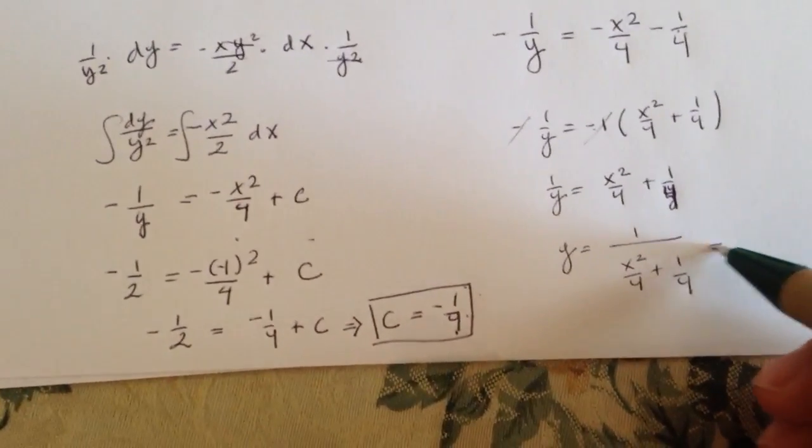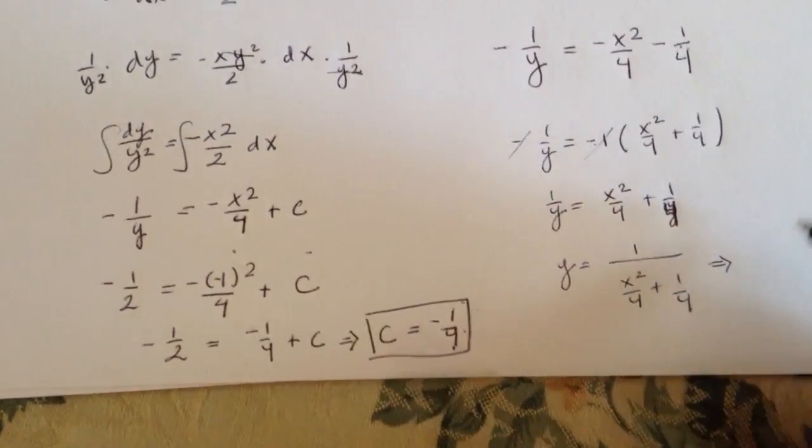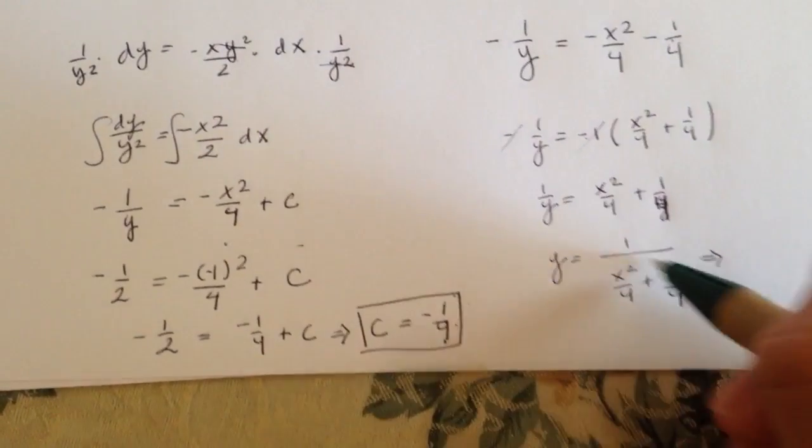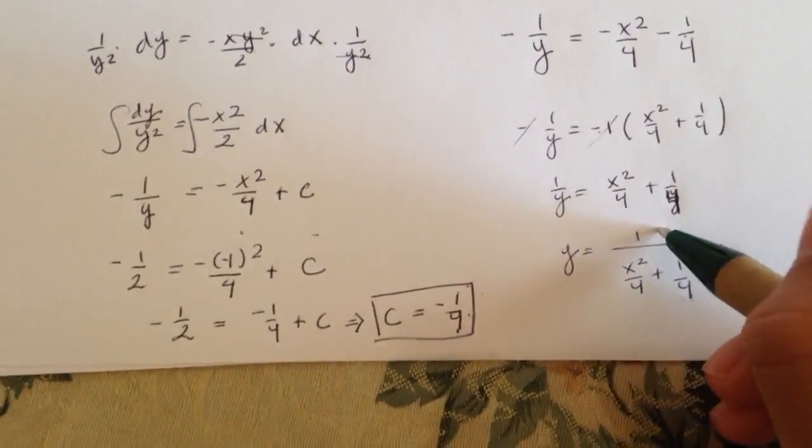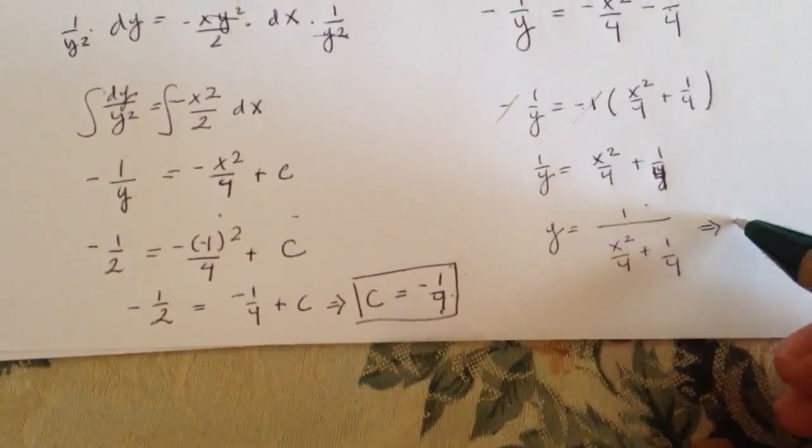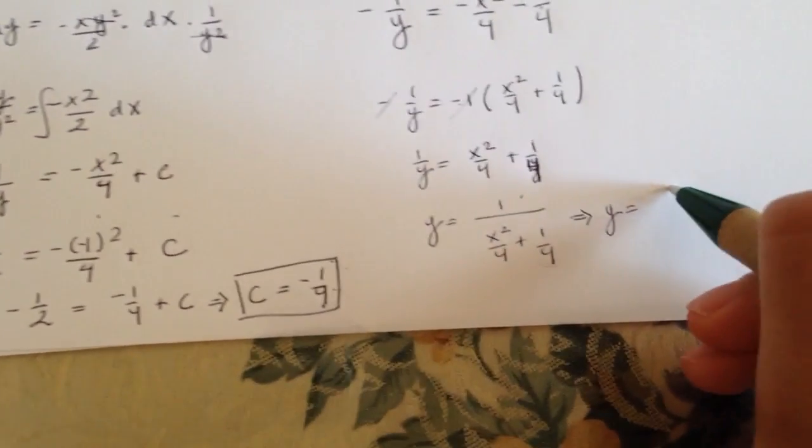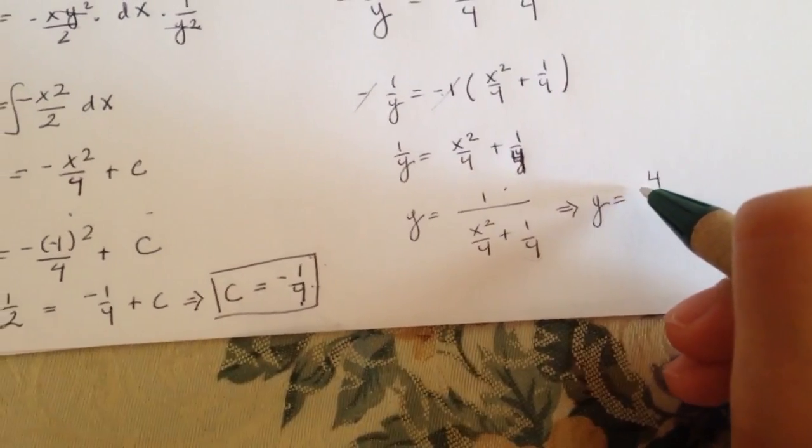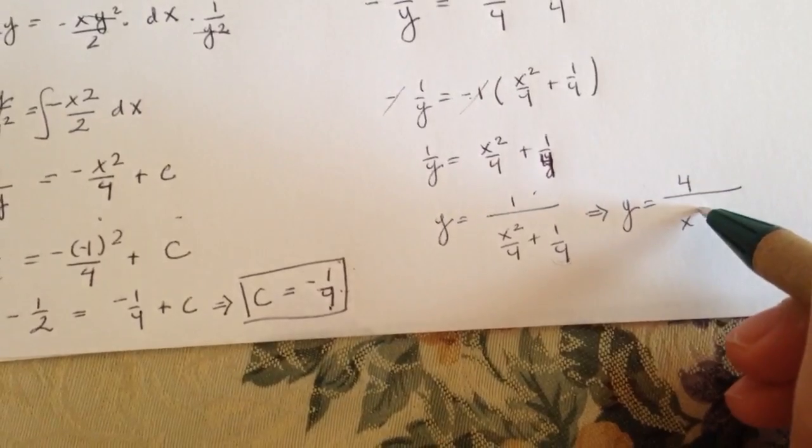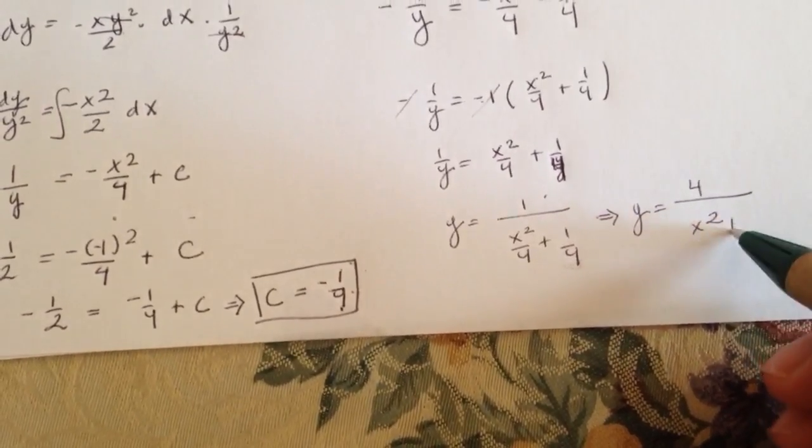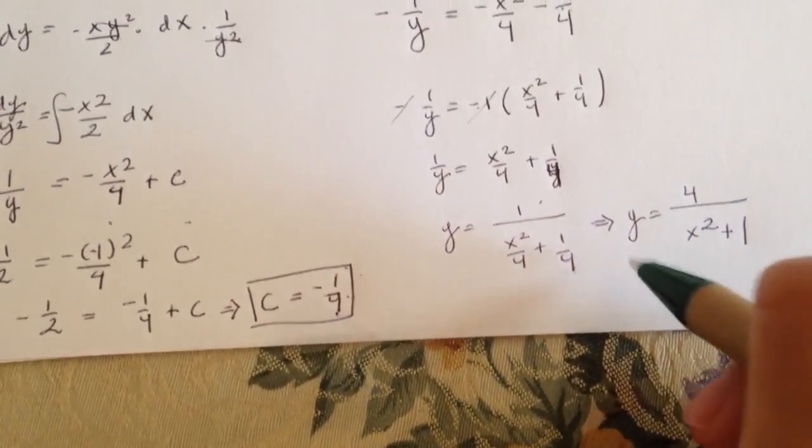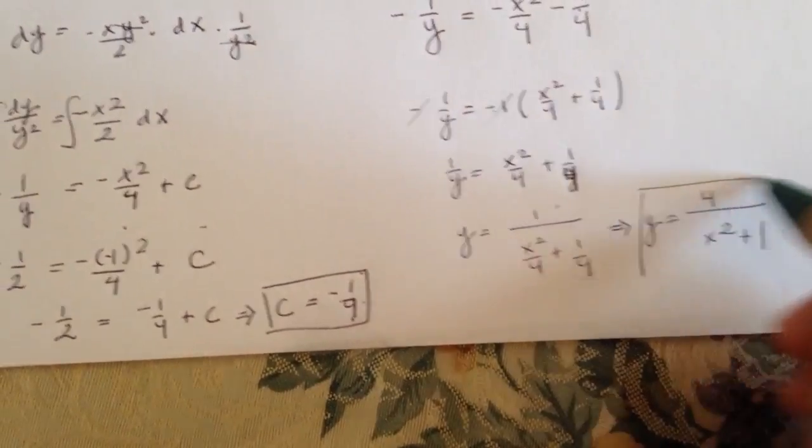So to simplify it, you would get, because this is a fraction, you have to multiply the denominator to the top. So then you'll get y will equal 4 over x squared plus 1. And that is your final answer.